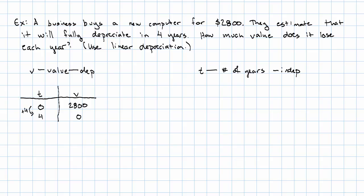T goes up by 4, V goes down by 2,800, and so the slope is the change in V over the change in T or negative 700.